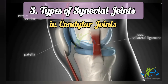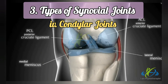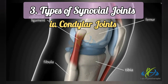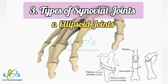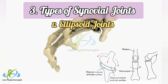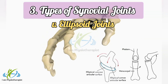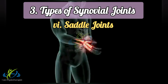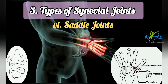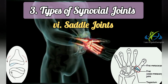Condylar joints: articular surfaces include two distinct condyles. These joints permit movements mainly in one plane around a transverse axis but partly in another plane around a vertical axis. Examples include the knee joint and temporomandibular joints. Ellipsoid joints: articular surfaces include an oval convex surface fitting into an elliptical concave surface, and free movements are permitted around both axes. Examples include wrist joint, metacarpophalangeal joints, and atlantooccipital joints. Saddle joints: movements are similar to those permitted in ellipsoid joints with the addition of some rotation around a third axis. Examples include first carpometacarpal joint, sternoclavicular joint, and calcaneocuboid joint.